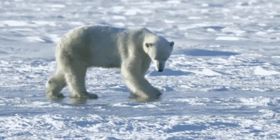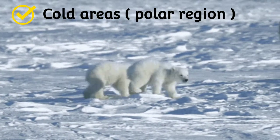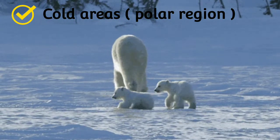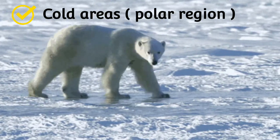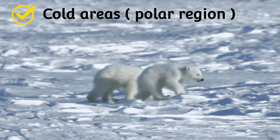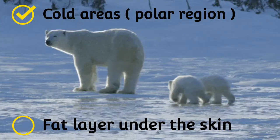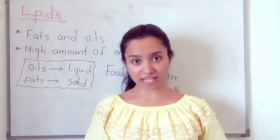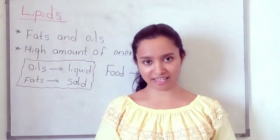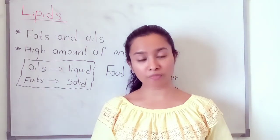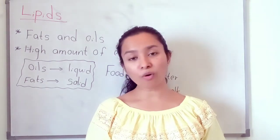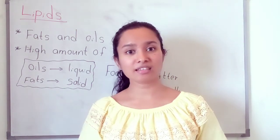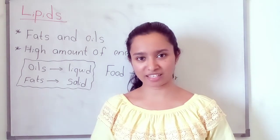For the polar bear — polar bears live in polar regions which are very cold. The polar bear has a thick fat layer under its skin which keeps the body warm. Also, during slow hunting periods, polar bears can take energy from their stored fat. So stored fat helps them stay warm and provides energy.